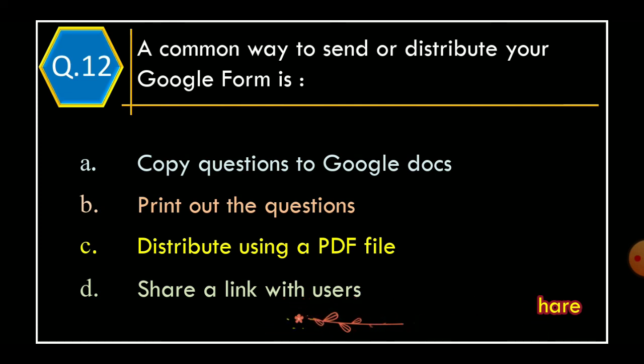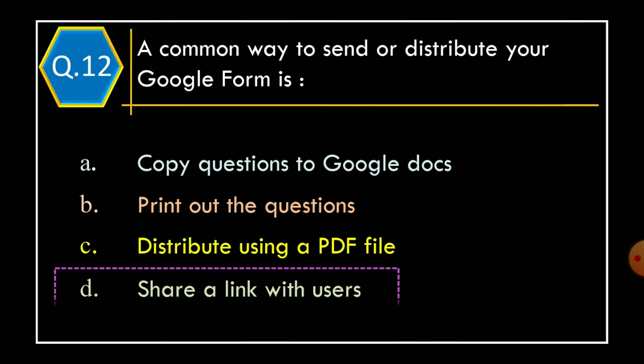Question 12. A common way to send or distribute your Google Form is: Option A, Copy questions to Google Docs; Option B, Print out the question; Option C, Distribute using a PDF file; Option D, Share a link with users. And the correct option is Option D, Share a link with users.